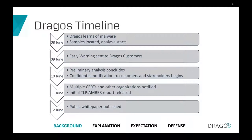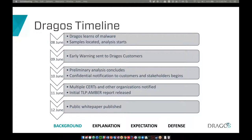On June 8th, we received an early copy of the ESET report to help validate some of their findings — that's when we initially learned of the malware. At that point we just had hashes, not the actual samples. We took those hashes, located the samples, and started analysis. Once we validated it was something significant, we sent early warning to our customers on that Friday.